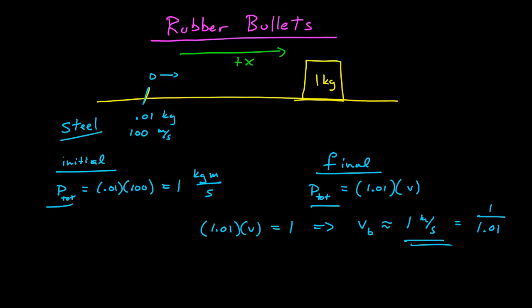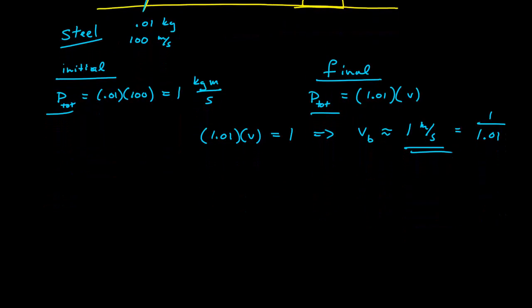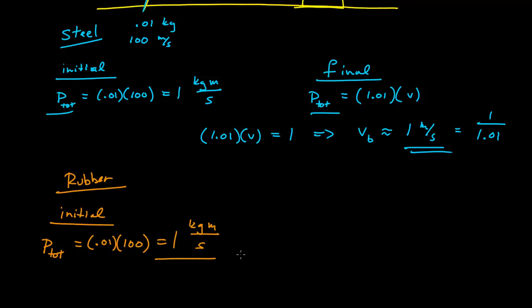So now, let's take a look at the rubber bullet. So initially, we have the same condition that we had before. So our bullet has the same mass traveling at the same velocity, and so it has the same momentum, kilogram meter per second, of 1. Well, what happens now at the final?